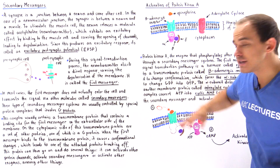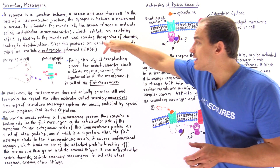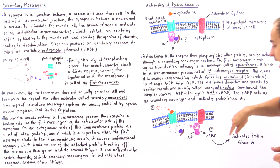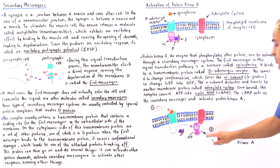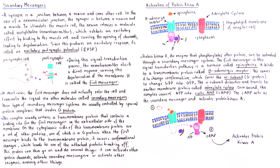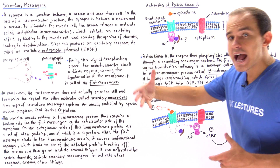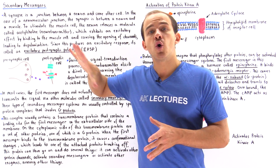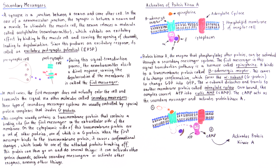Epinephrine is the primary or first messenger in this signal transduction process. The secondary messenger — cyclic AMP — then goes on to activate protein kinase A, so that protein kinase A can phosphorylate other enzymes inside the cell.